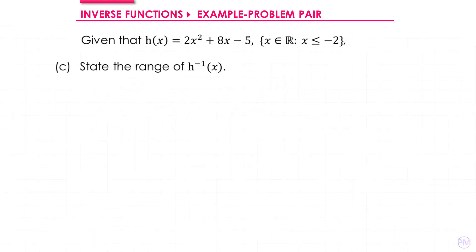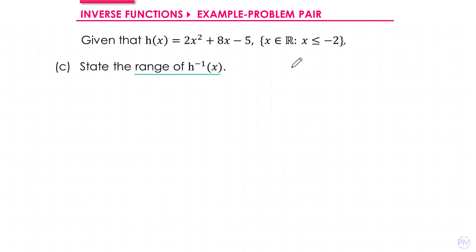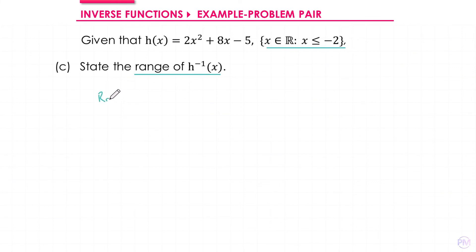In part c we need to state the range of the inverse function. The range of the inverse function is simply the same as the domain of the original function, so we get h⁻¹(x) ≤ -2.